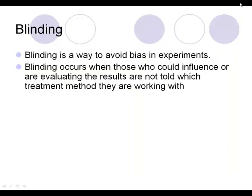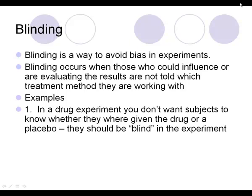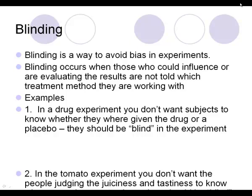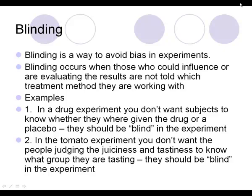Blinding is a way to avoid bias in an experiment. Blinding occurs when those who can influence the outcome or evaluate the results are not told which treatment they are working with. For example, in a drug experiment you wouldn't want subjects to know whether they were given the drug or the placebo. In the tomato experiment, the people judging the tomatoes shouldn't know which plants had fertilizer added, as that might influence their opinion.